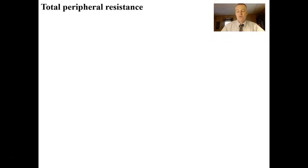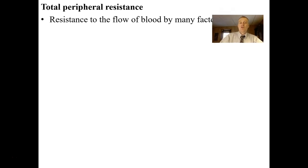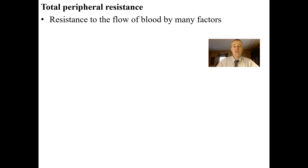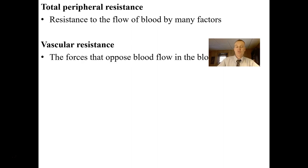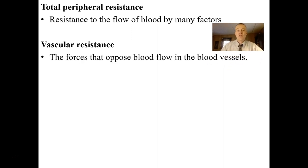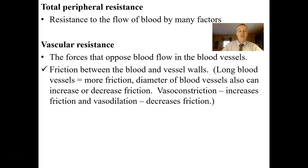We also have resistance to pressure. Total peripheral resistance is the resistance to the flow of blood, and many factors create this resistance. Vascular resistance includes the forces that oppose blood flow in the blood vessels, such as friction between the blood cells and the vessel walls. Long vessels create more friction. The diameter of blood vessels can also increase or decrease friction — vasoconstriction increases friction, vasodilated blood vessels decrease friction.